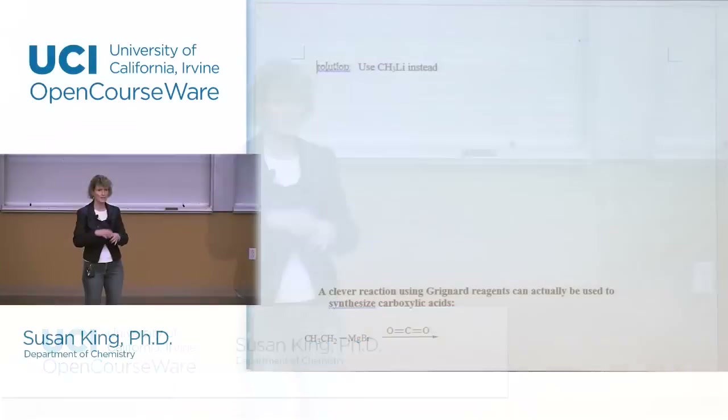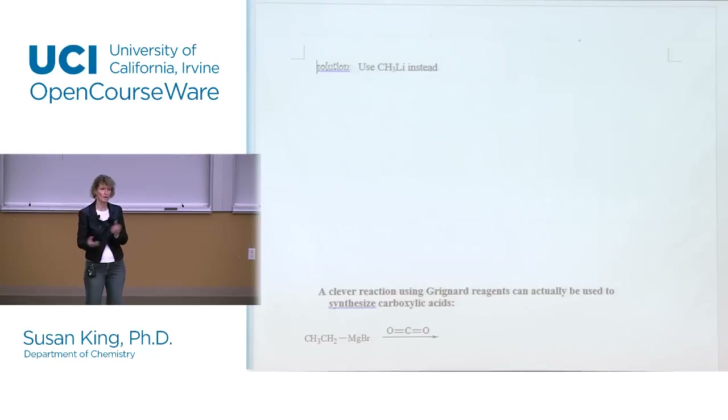You should be nearing the end of working problems in Chapter 21 if you want to stay ahead, and you definitely want to stay ahead because everything in carbonyl chemistry builds upon what we've already learned. That's seven weeks of carbonyl chemistry, so you don't want to get behind.